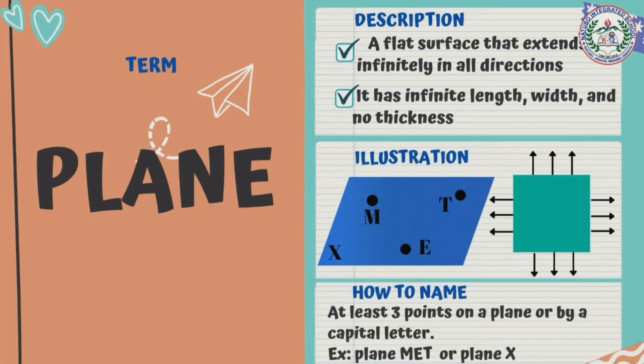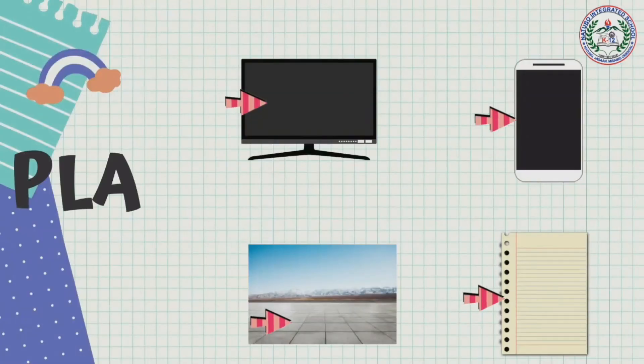Plane is a flat surface that extends infinitely in all directions. It has infinite length, width, and no thickness. As you can see in the illustration, we have our plane which has points M, E, and T, and the X is the name of the plane. So how to name a plane? At least three points in a plane or by a capital letter. So for our illustration, we have plane MET or plane X.